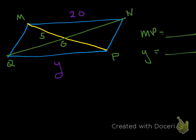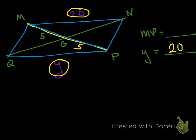This next one is not too difficult. Opposite sides are congruent — if this side is 20, then that side has to be 20 as well, so y equals 20. We also know that the diagonals bisect each other, so each half is 5. They want to know MP, which goes all the way from M to P, so 5 plus 5 is 10.